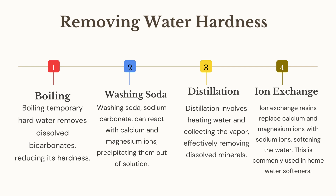Due to the diverse effects of hard water on the environment, health, and in industries, there is a need for scientists to control water hardness by designing different ways of removing or reducing it. We have several methods: one is boiling, which is used to remove hardness from temporary hard water by removing dissolved bicarbonates. Two is washing soda — sodium carbonate — which can react with calcium and magnesium ions, precipitating them out of solution.